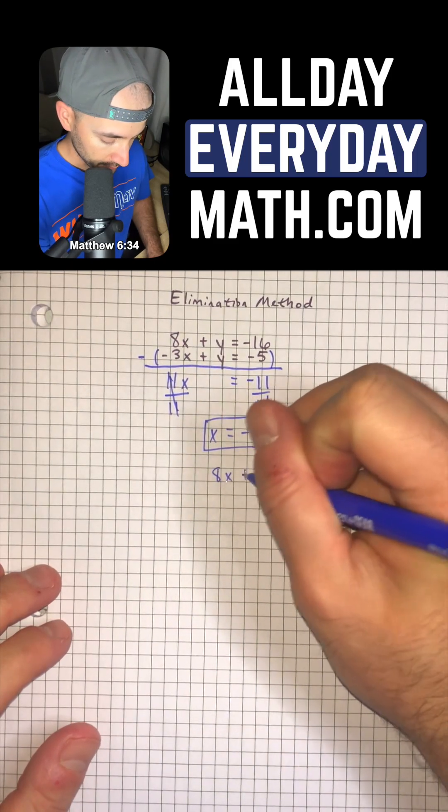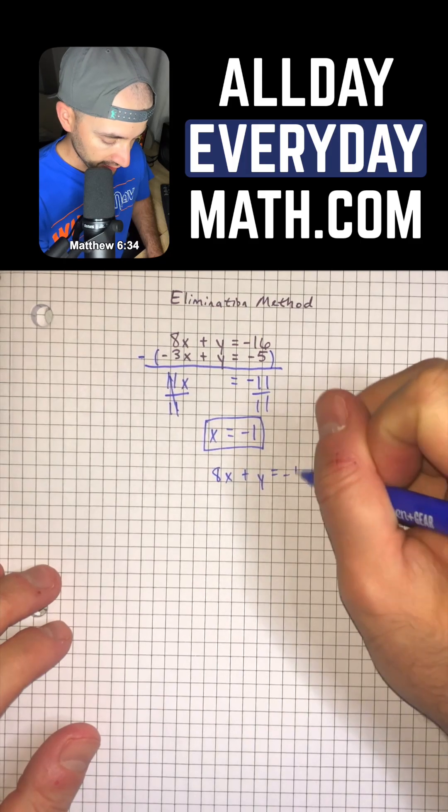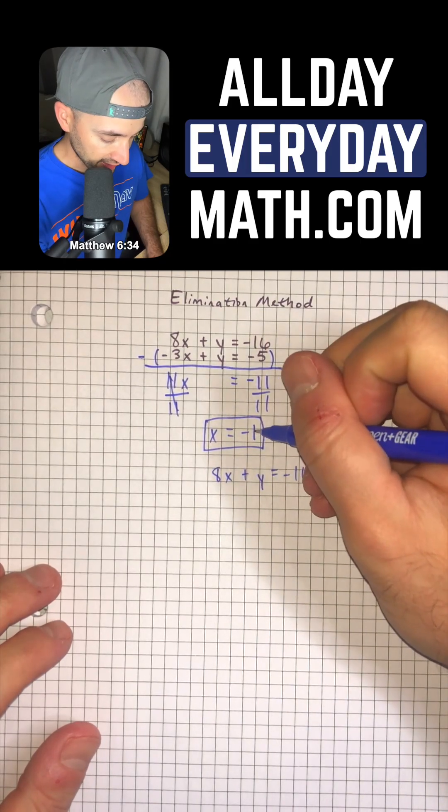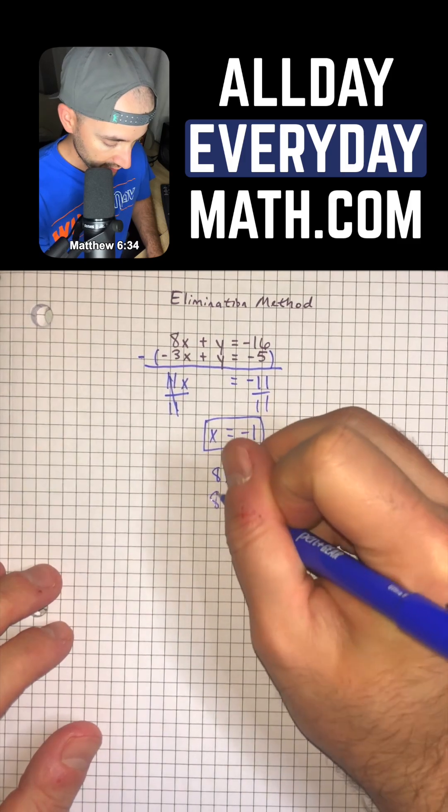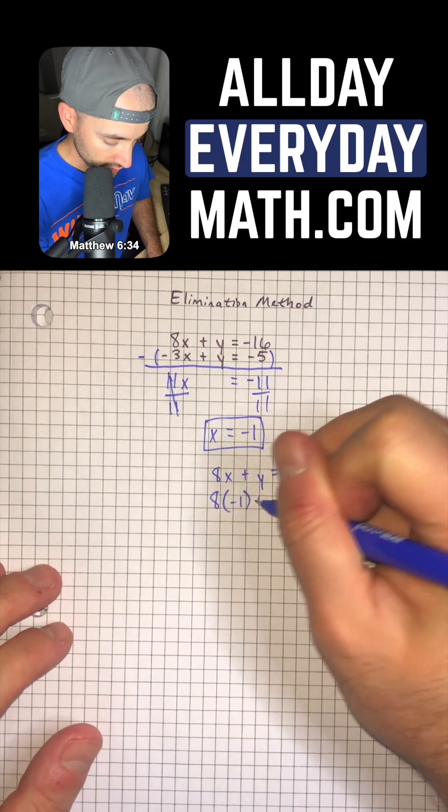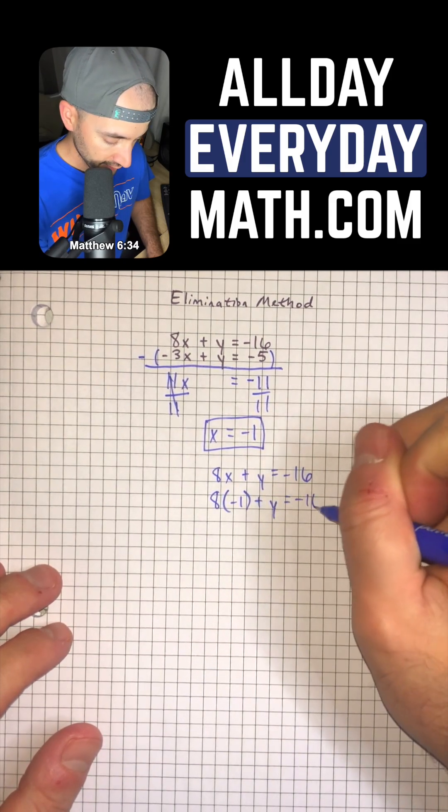So 8x plus y is equal to negative 16. We can just take that negative 1 and plug in for x. So 8 times negative 1 plus y equals negative 16.